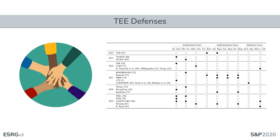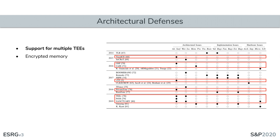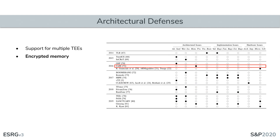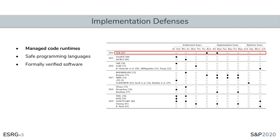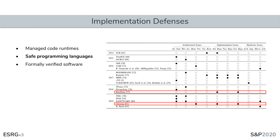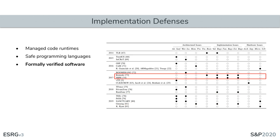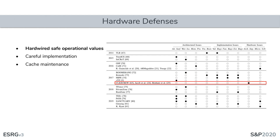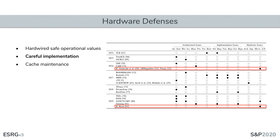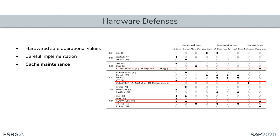The research community has been vigilant and many solutions have been proposed. Architecture-wise, support for multiple TEs by creating multiple isolated environments prevents flaws in one app or OS from affecting another. Researchers have also proposed encrypted memory to prevent cold boot or bus snooping attacks. Implementation-wise, researchers propose managed code runtimes in the secure world, safe programming languages such as Rust, and formally verified software within the secure world. Hardware-wise, safe operational values should be hardwired to mitigate energy attacks, and careful implementation of cryptographic algorithms with adequate cache maintenance addresses cache side channels.